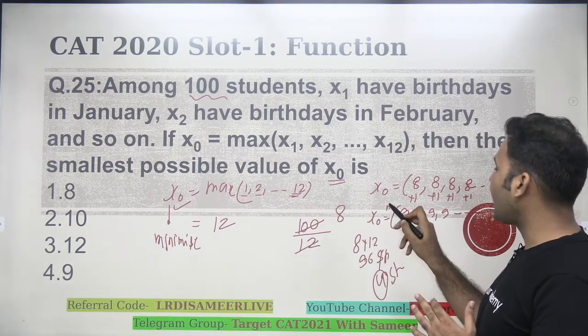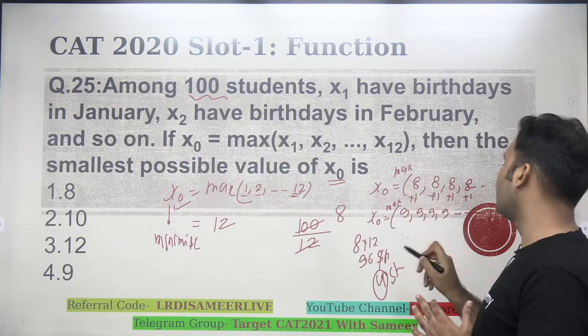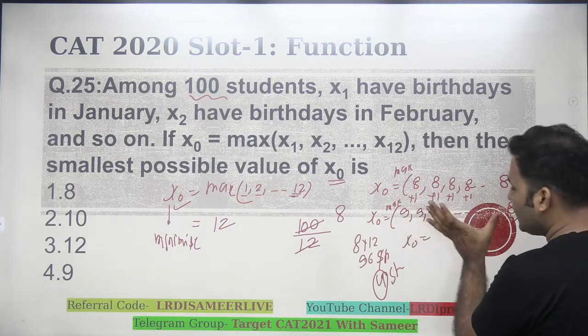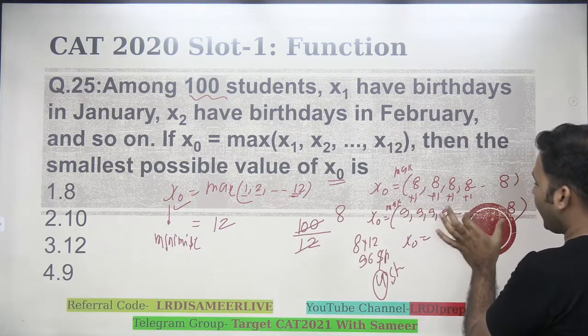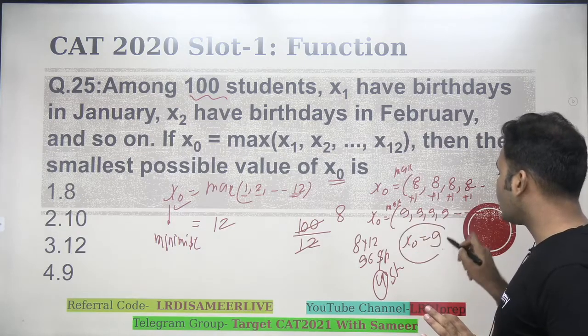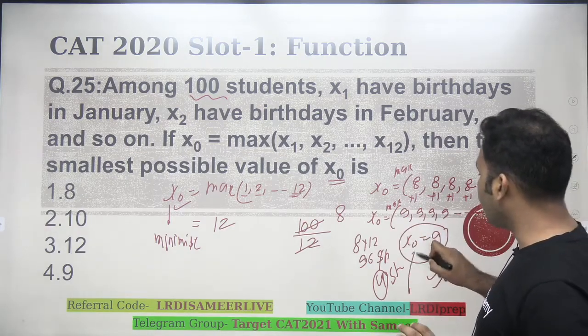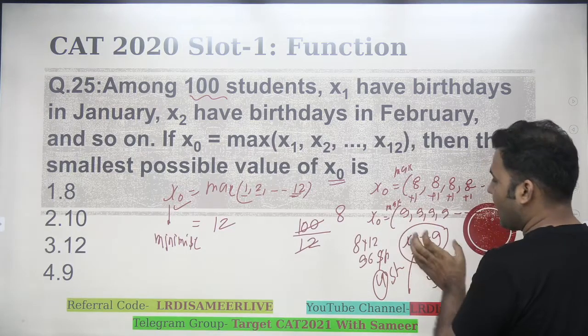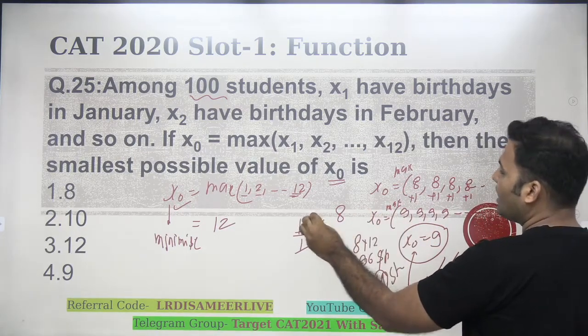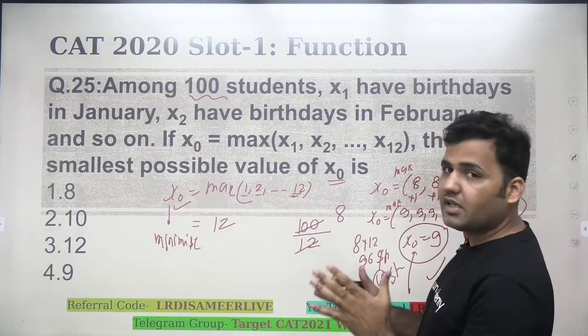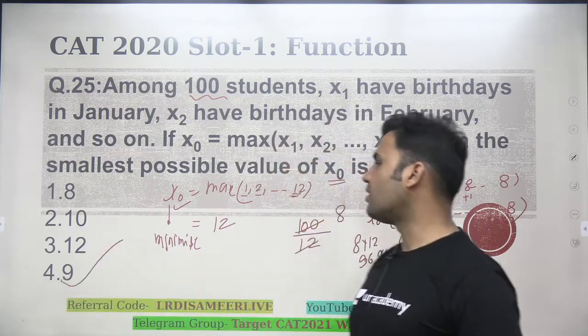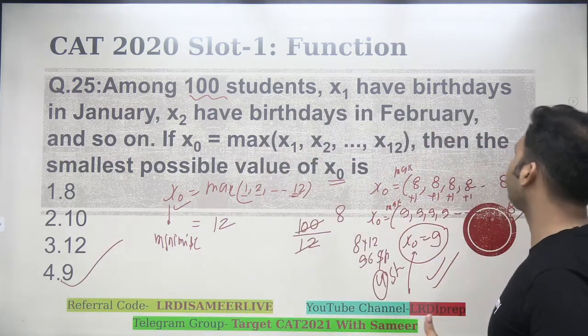Now, because I have the word maximum written outside of the bracket, so what is the maximum possible value among these 12 values, where 4 values are equal to 9, and 8 values are equal to 8, maximum value will be 9. So therefore, the minimum possible value, the max is output of x0, and because we are trying to minimize it, we are distributing the total 100 evenly among all, as many values as possible. So minimum possible value of x0 is equal to 9, that's question number 4.